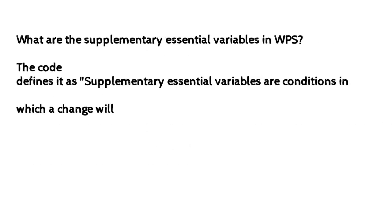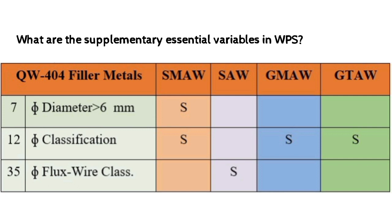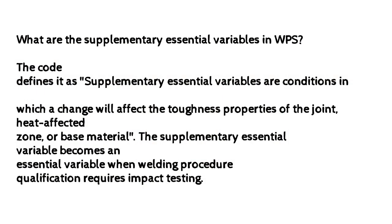What are the supplementary essential variables in WPS? The code defines supplementary essential variables as conditions in which a change will affect the toughness properties of the joint, heat affected zone, or base material. The supplementary essential variable becomes an essential variable when welding procedure qualification requires impact testing.